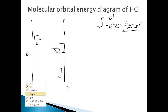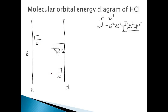The energy of the 3p orbital of chlorine is lower than the 1s orbital of hydrogen. The 3s orbital cannot combine or linearly combine with the 1s orbital because of the vast energy difference. So the 3s remains as non-bonding electrons — they remain as non-bonding electrons as 3s itself.